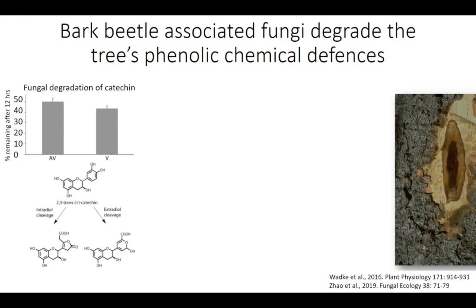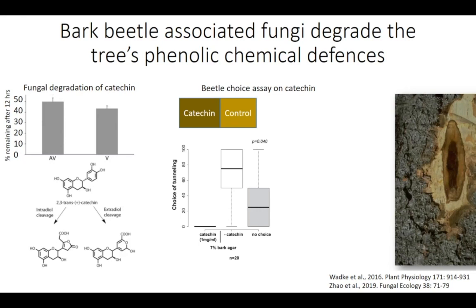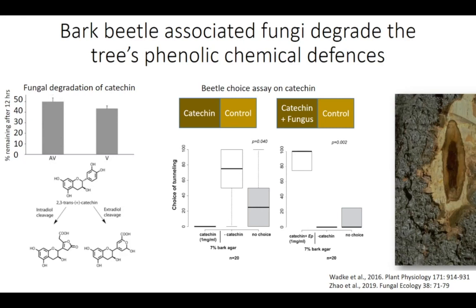Catechin is abundant in spruce phloem. When incubating two bark beetle-associated fungi, V and AV, in artificial medium containing catechin, we find a significant decrease of this compound after 12 hours. The fungus makes lactones from the catechin using two different reaction mechanisms, and these intermediary compounds are then further metabolized as an energy source. In a choice experiment, all beetles that made a choice chose the medium without additional catechin. However, when we inoculated a fungus on the medium containing catechin, the beetles now chose the medium with catechin on which the fungus was growing, showing that one important role of bark beetle-associated fungi is the detoxification of host defense compounds.